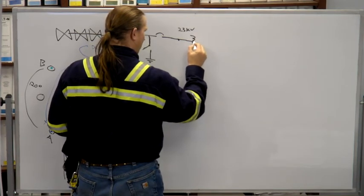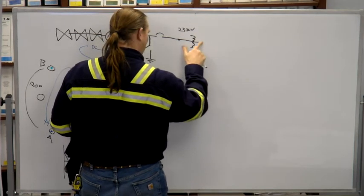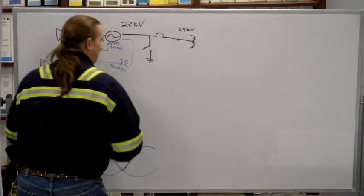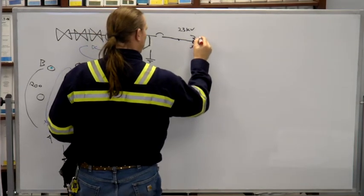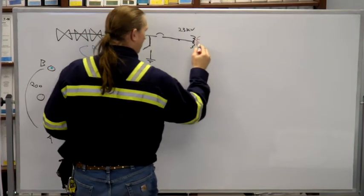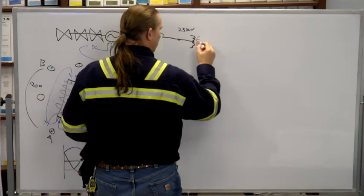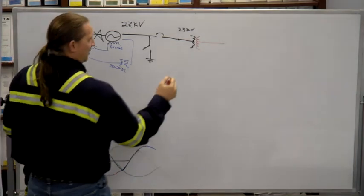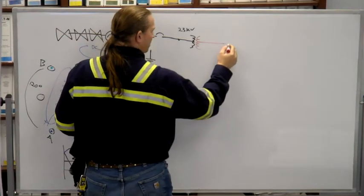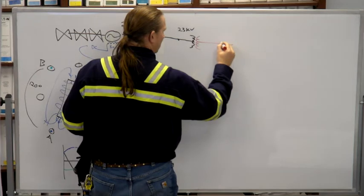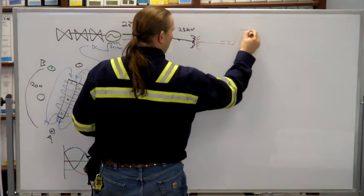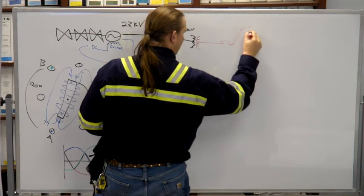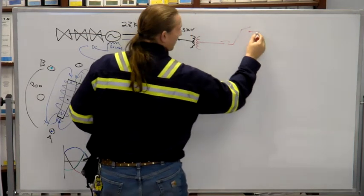And then we have another disconnect that creates an air gap between the generator and the yard. Still 23,000 volts. And then we go to the switch yard.